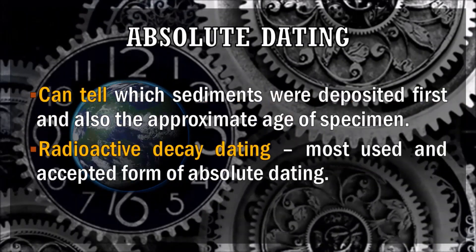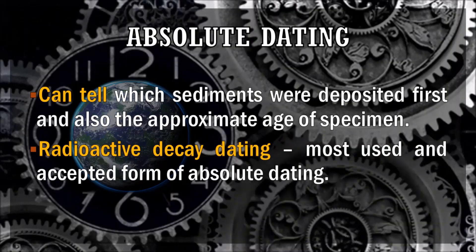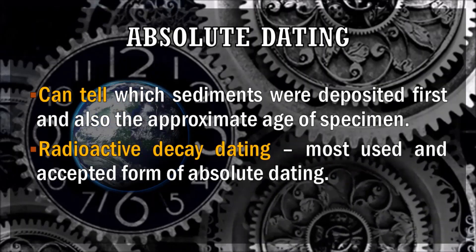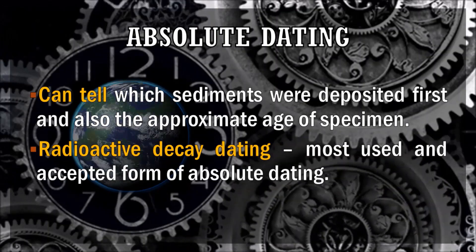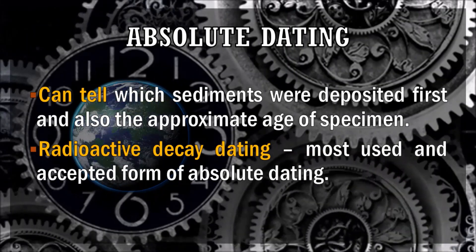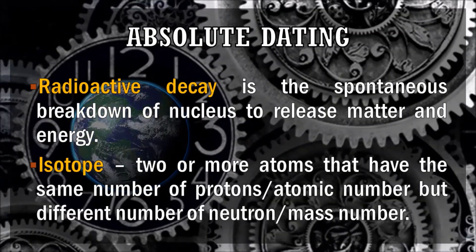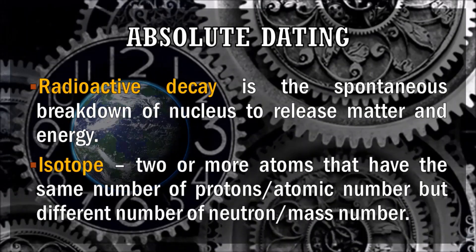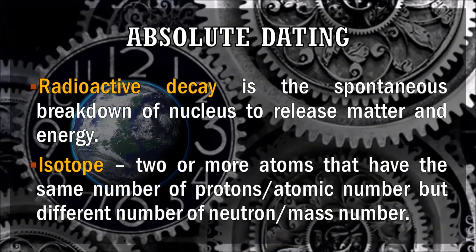The other type of dating method is absolute dating. Absolute dating methods can tell which sediments were deposited first and also the approximate age of the specimen. The most used and accepted form of absolute dating is radioactive decay dating. Most absolute dating makes use of radiometric methods wherein radioactive minerals are used to compute the age of rocks. Radioactive decay is the spontaneous breakdown of the nucleus of an atom to release matter and energy. Isotopes, which are present in radioactive elements, break down at a constant rate.